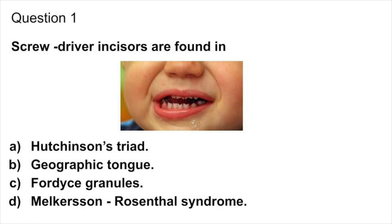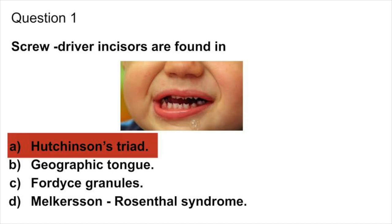Question 1. Screwdriver incisors are found in: Hutchinson triad, geographic tongue, Fordyce granules, or Melkersson-Rosenthal syndrome? Answer: Hutchinson triad.